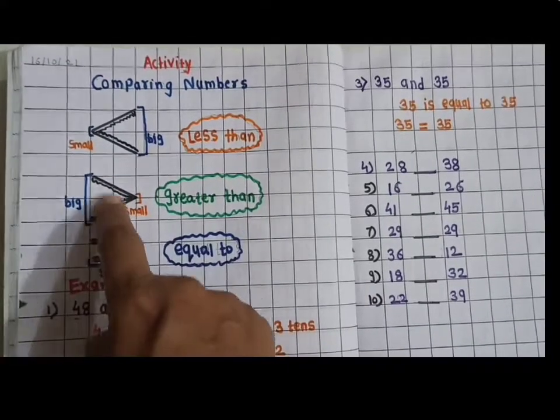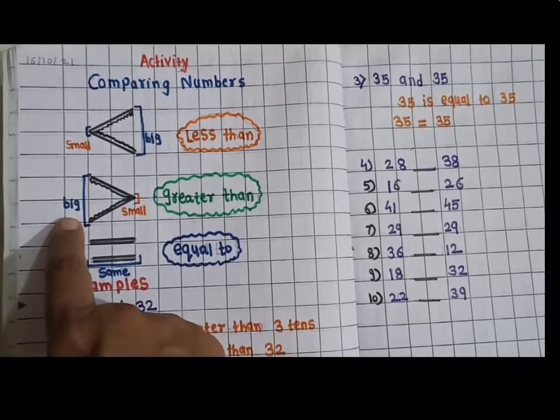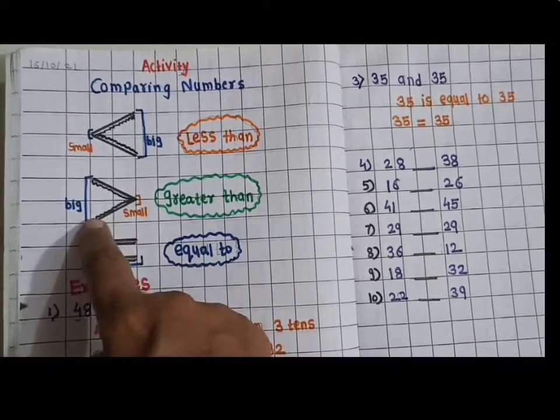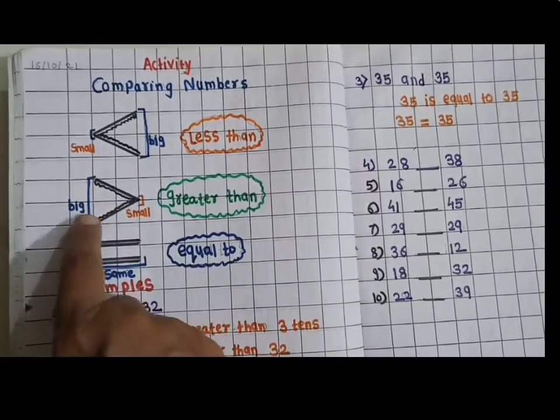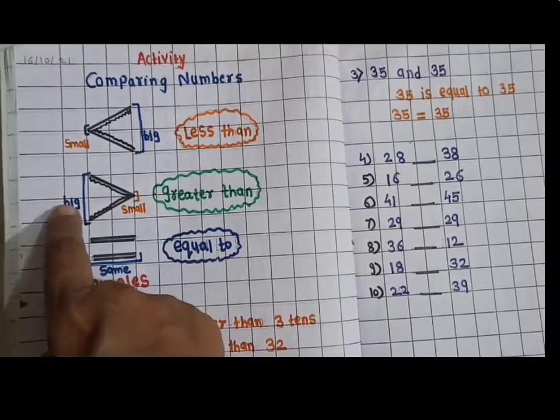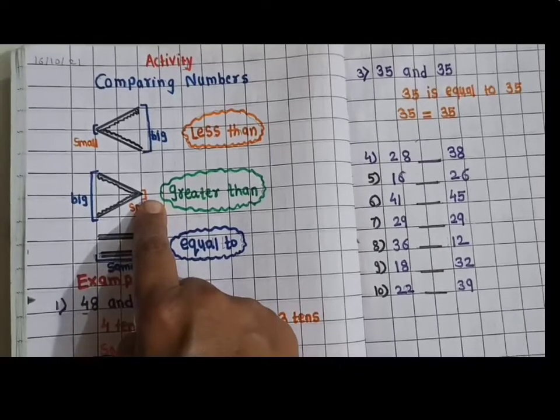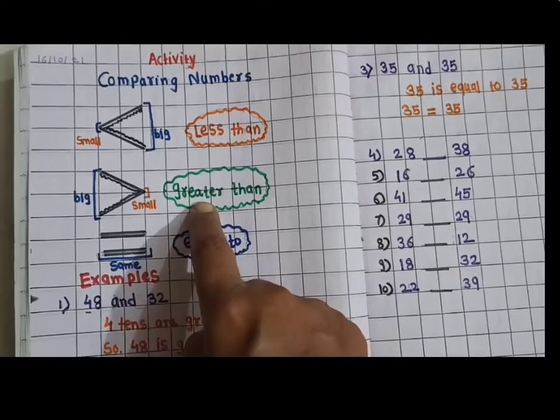Now see this sign here. Left side here, open space or open pointed or opens. So this side big numbers will come, and here small number. So this sign is called greater than.